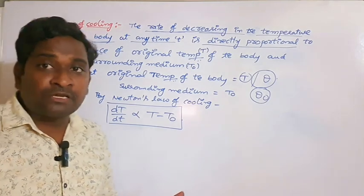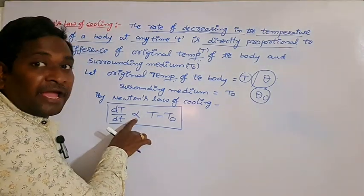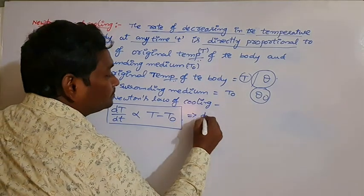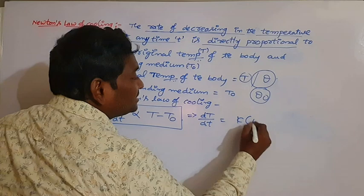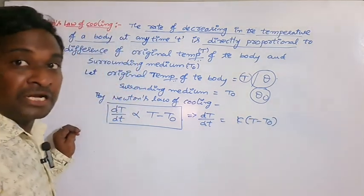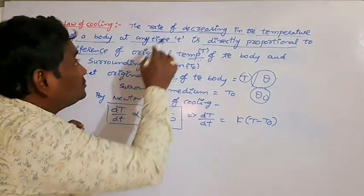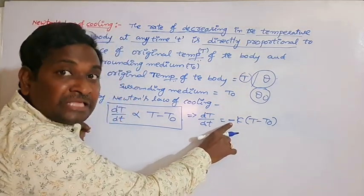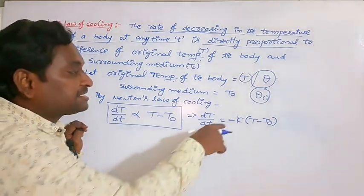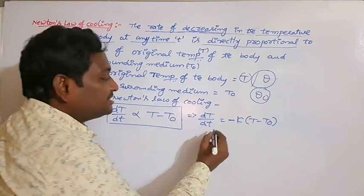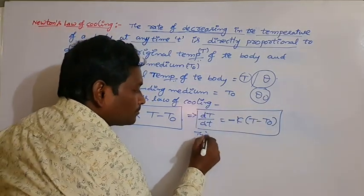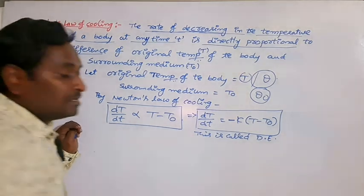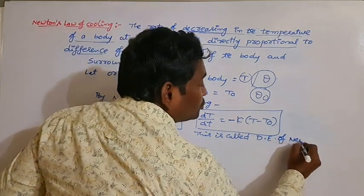If you already know physics, here is the proportionality symbol replaced by a constant. So, dT/dt is equal to k into (T minus T0). Here, k is the constant of proportionality, and the negative sign indicates the decreasing in temperature. So, dT/dt equals minus k(T minus T0). This is the first order differential equation — the differential equation of Newton's law of cooling.